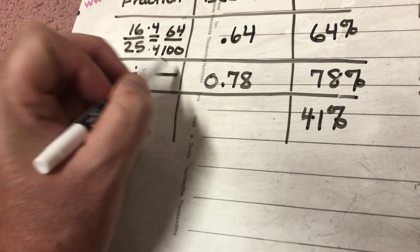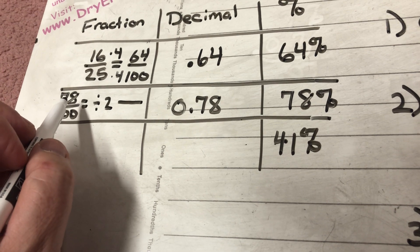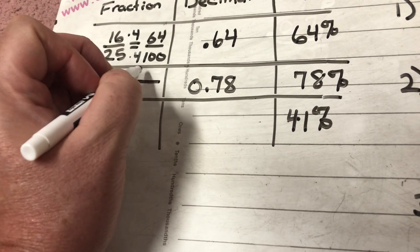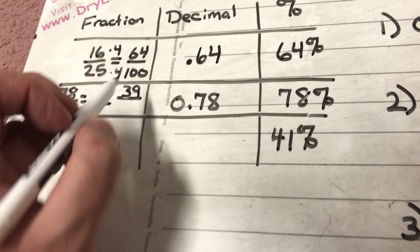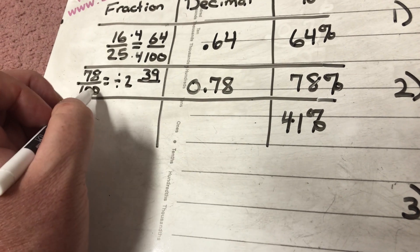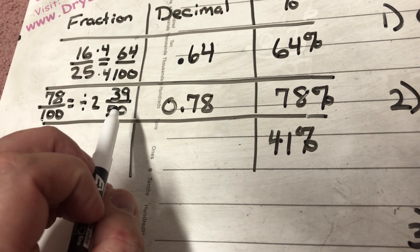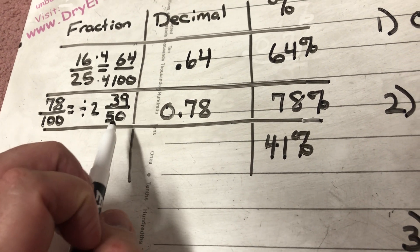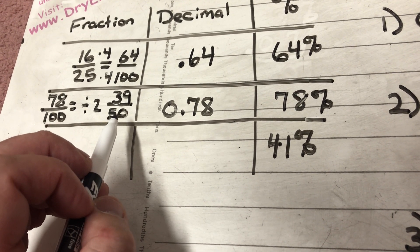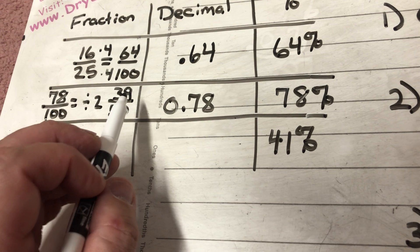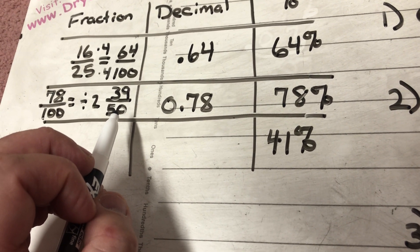Dividing both by 2: 78 divided by 2 is 39, and 100 divided by 2 is 50, giving us 39 over 50. I can check that it's in simplest form — the only number that goes into both 39 and 50 is 1. There are other numbers that divide 39 and other numbers that divide 50, but no common factor other than 1, so 39 over 50 is the equivalent fraction in simplest form.